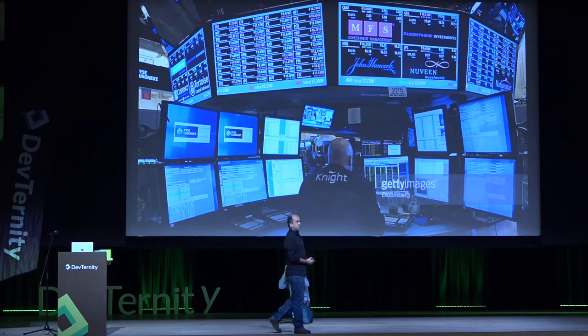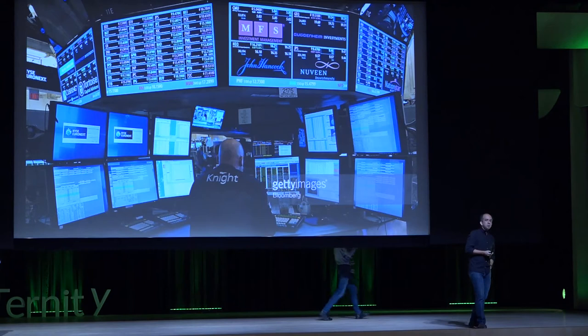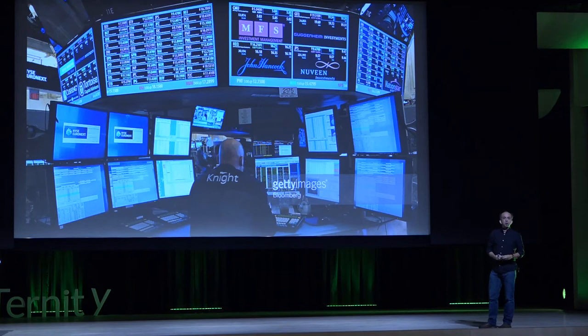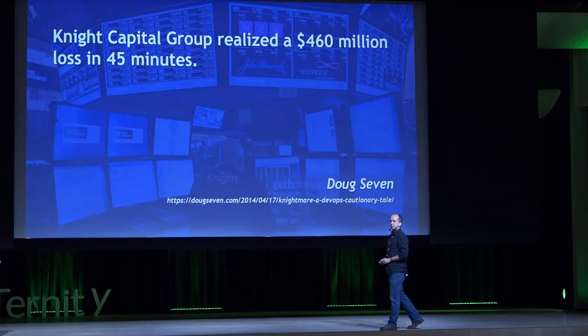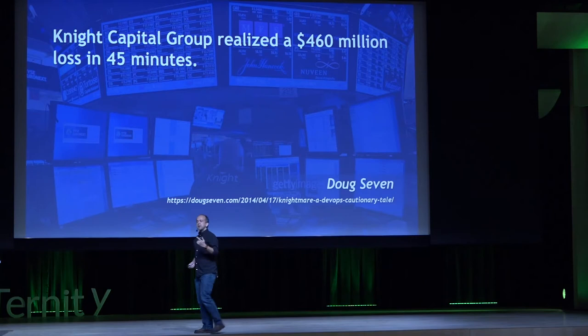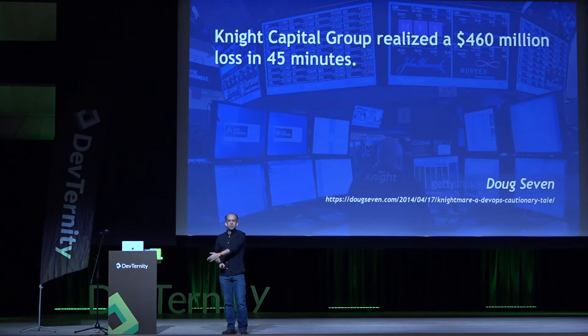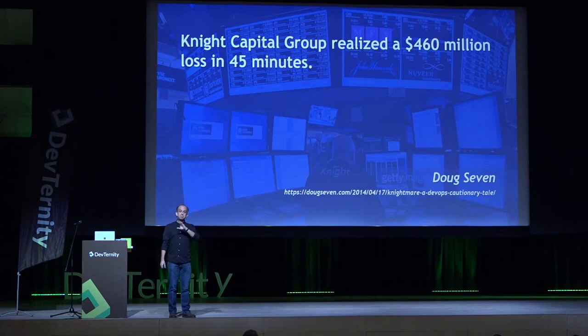One of my favorite examples that demonstrates how much money you can lose is Knight Capital, who on 1st of August 2012, going from the 31st of July, put new systems in place to take advantage of a new service offered by the New York Stock Exchange. Knight Capital Group realized a $460 million loss in 45 minutes — $10 million a minute. This is the final figure after everything was rolled back, because there is a sort of agreement that if things are done in error, you can roll back the transactions.